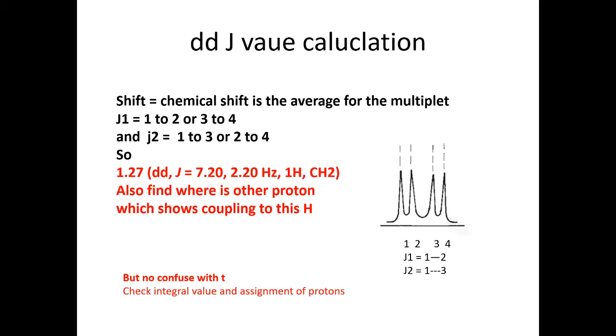How do you use this spectra to calculate the shift and J value? The chemical shift is the average of the multiplet. But here we have two J values: one is J1, which is 1 to 2 or 3 to 4 (the small J value), and another is the large J value J2, which is 1 to 3 or 2 to 4.